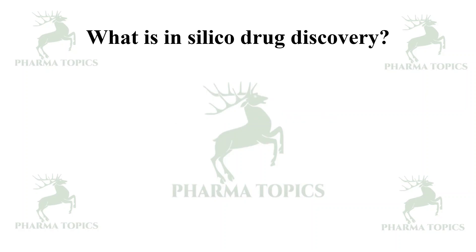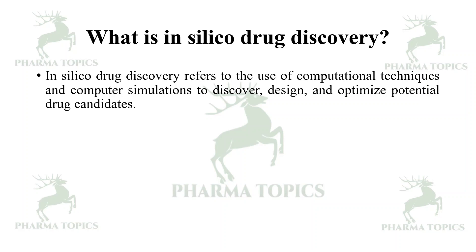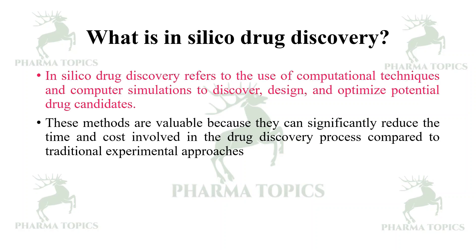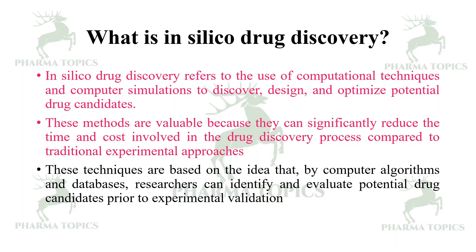What is in silico drug discovery? In silico drug discovery refers to the use of computational techniques and computer simulations to discover, design, and optimize potential drug candidates. These methods are valuable because they can significantly reduce the time and cost involved in the drug discovery process compared to traditional experimental approaches. These techniques are based on the idea that by using computer algorithms and databases, researchers can identify and evaluate potential drug candidates prior to experimental validation.